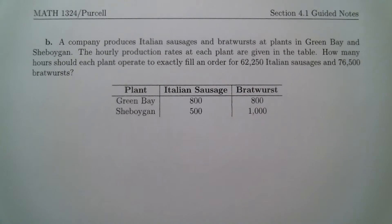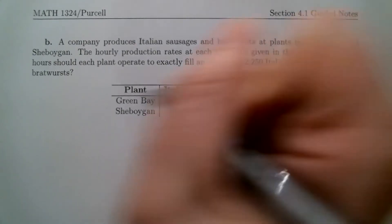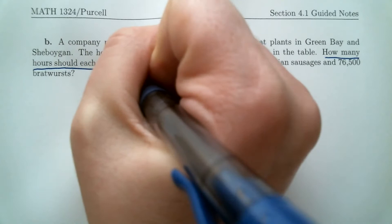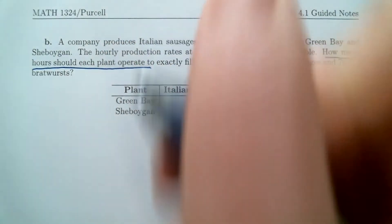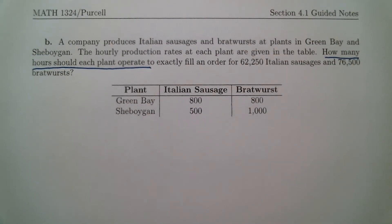The first thing we need to do to solve this problem is set up our system of equations, but before we can do that, we've got to define the variables — what are we looking for? Look in the last sentence: how many hours should each plant operate? There are two plants.